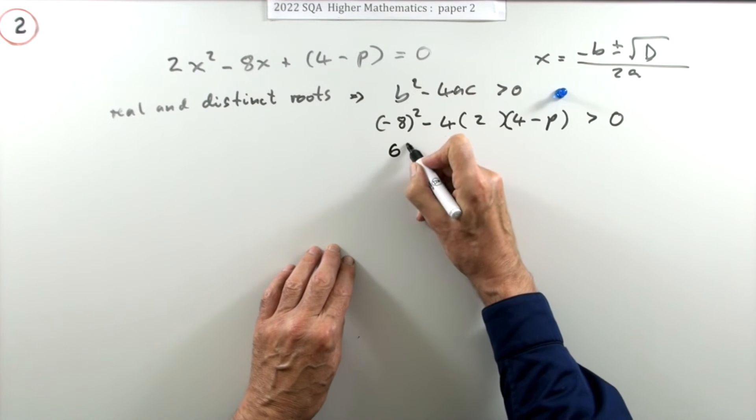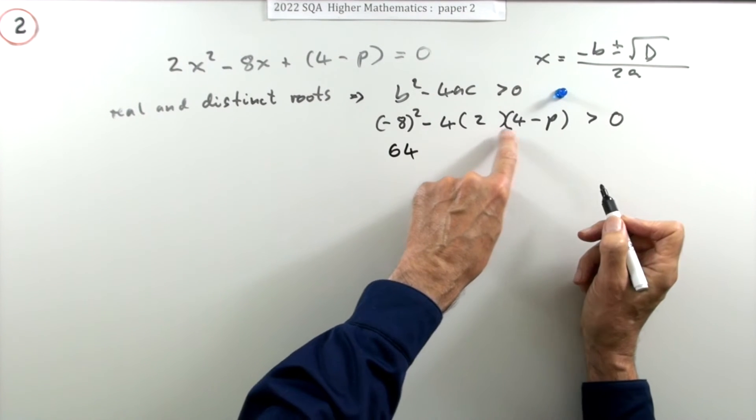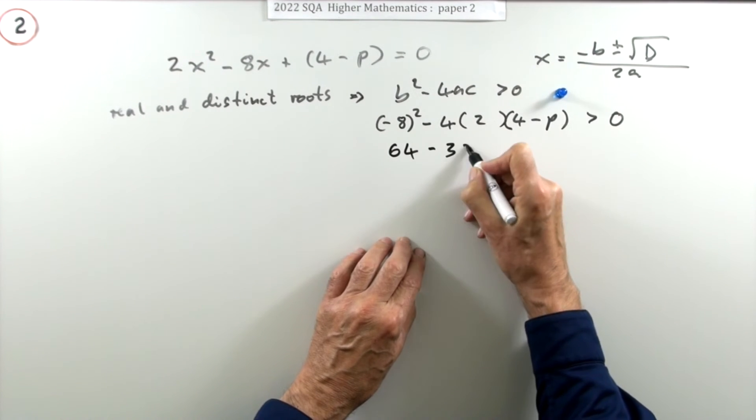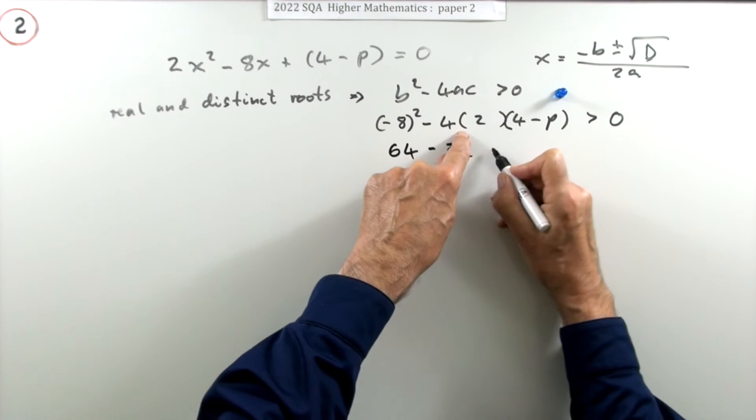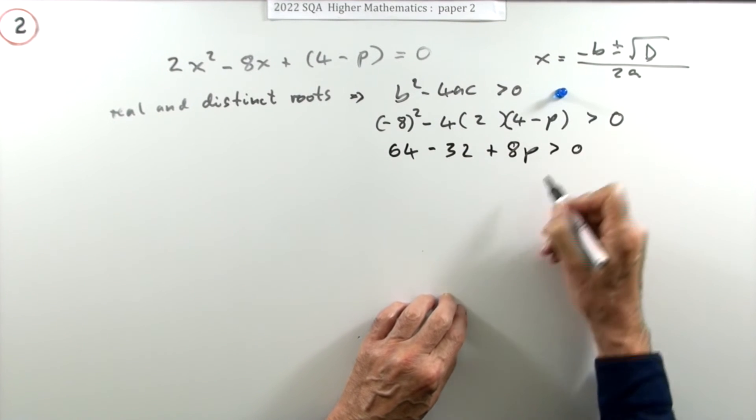Now applying the condition, which is it has to be greater than zero. Simplifying this, so what have I got so far? That'll be positive 64. That's minus 8 times 4, that's minus 32, but that'd be minus 8 plus 8p is greater than zero.